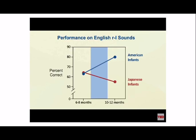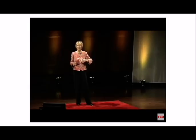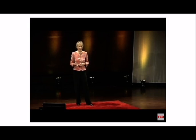Research comparing babies in Tokyo and Seattle listening to R and L sounds — important in English but not Japanese — showed that at six to eight months the babies are totally equivalent. Two months later something incredible occurs: babies in the US get much better, while babies in Japan get much worse. Both groups are preparing for exactly the language they are going to learn, during this critical two-month period for sound development.